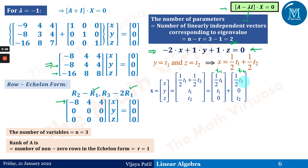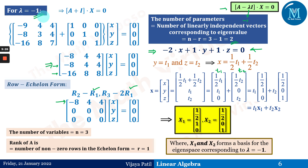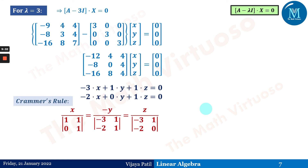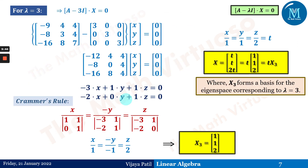Splitting the solution gives basis vectors x1 = [1/2, 1, 0] and x2 = [1/2, 0, 1] for λ = −1. For the non-repeated eigenvalue λ = 3, applying Cramer's rule (using any two equations) yields x3 = [1, 1, 2] as the basis for the eigen space corresponding to λ = 3.